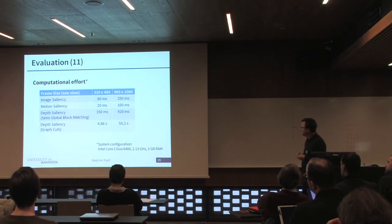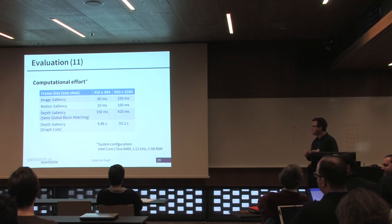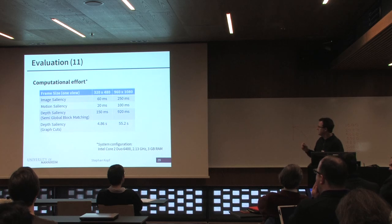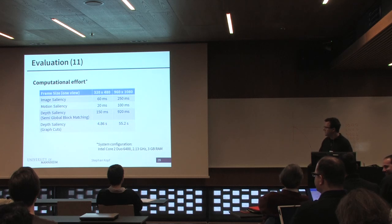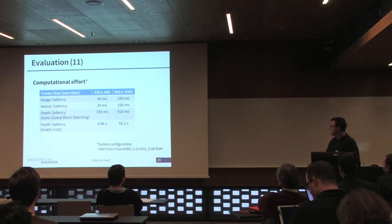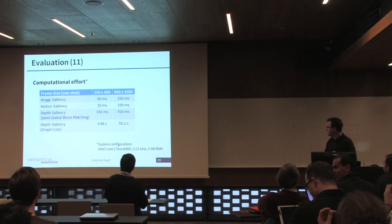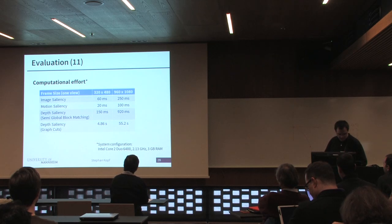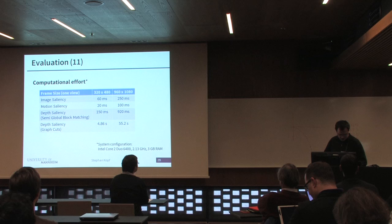One brief note about computation time: it's pretty fast for low-resolution images — about 60 milliseconds for image saliency, 20 for motion, and 150 for depth saliency. If we use more complex estimations for depth saliency, like a graph cut approach, this takes perhaps 50 to 100 times as long. But we can use it for videos; it's not real time, but with some optimization I think processing videos in real time should not be a problem.